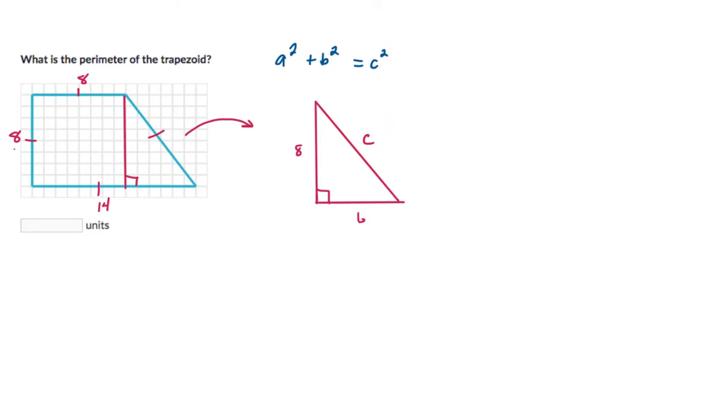Now we just need to find this side length which we don't know. We'll call it c because it's a hypotenuse. We're going to use this formula, and it doesn't matter which numbers you plug in for a and b, but the longest side length which is opposite of the 90 degree is always letter c.